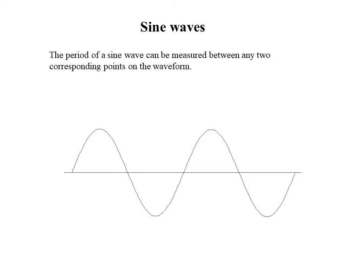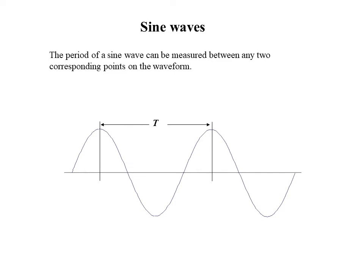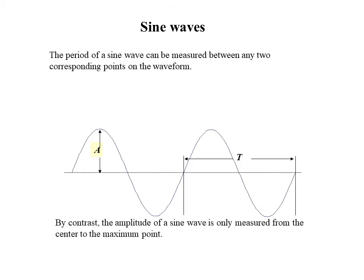The period of a sine wave can be measured between any two corresponding points on the waveform. This is positive maximum, negative maximum, and again reaches to 0. The consecutive points where the waveform repeats are considered one time period. We are taking any two corresponding points and that will be taken as one time period. By contrast, the amplitude of the sine wave is only measured from the center to the maximum point. This is how we can take amplitude as well as time period.